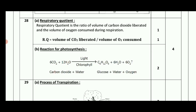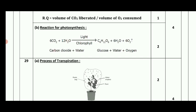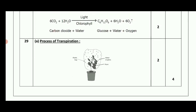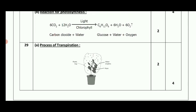The photosynthesis reaction: 6CO₂ + 12H₂O + light + chlorophyll → C₆H₁₂O₆ + 6H₂O + 6O₂. Carbon dioxide plus water yields glucose, water, and oxygen. The next one is the diagram of the process of transpiration — open type and closed type transpiration diagram.